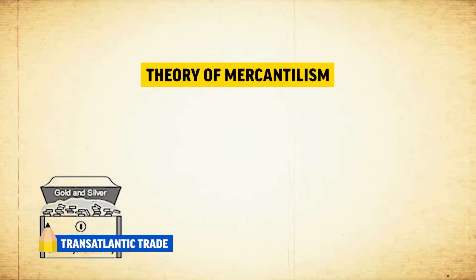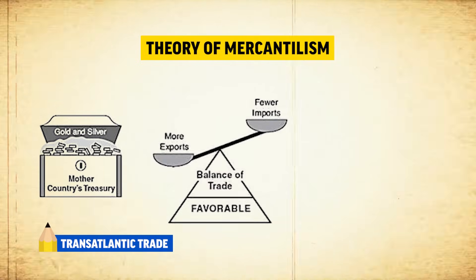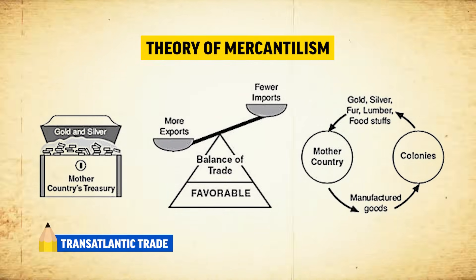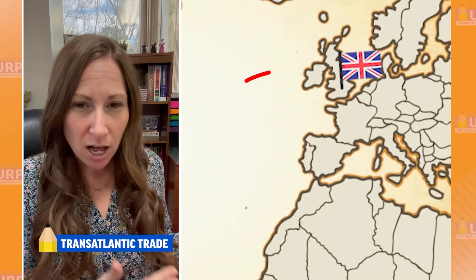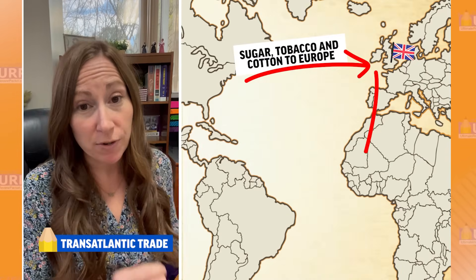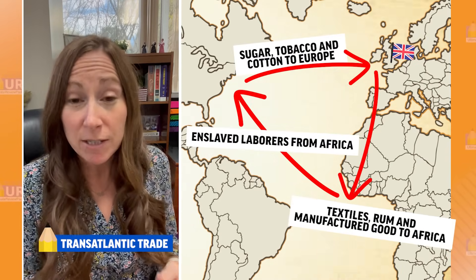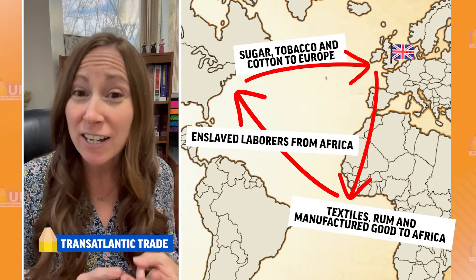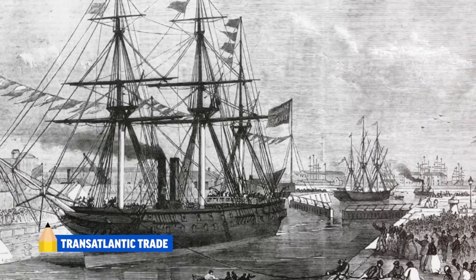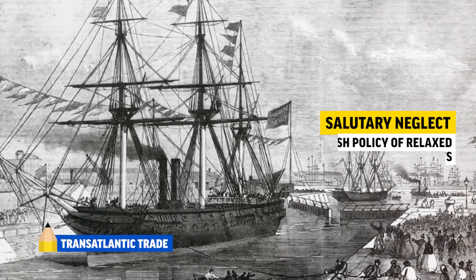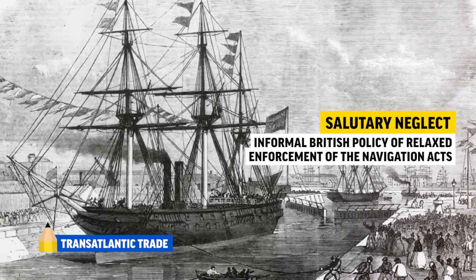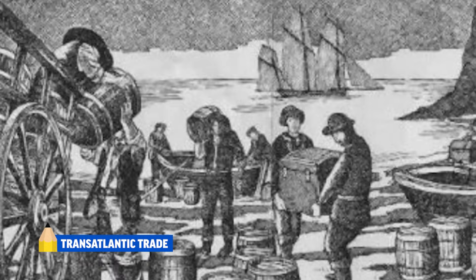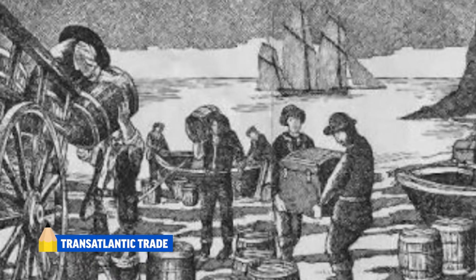Next, let's talk about trade. The British colonies were founded according to the theory of mercantilism, where a country becomes wealthy by exporting more than it imports. Under this theory, the British colonies became part of a trade network known as the Triangular Trade, which took place between Europe, Africa, and the Americas. To better control colonial trade, the crown passed a series of Navigation Acts, but these were rarely enforced in a policy known as salutary neglect. The colonists enjoyed this economic freedom and made personal profit through smuggling.